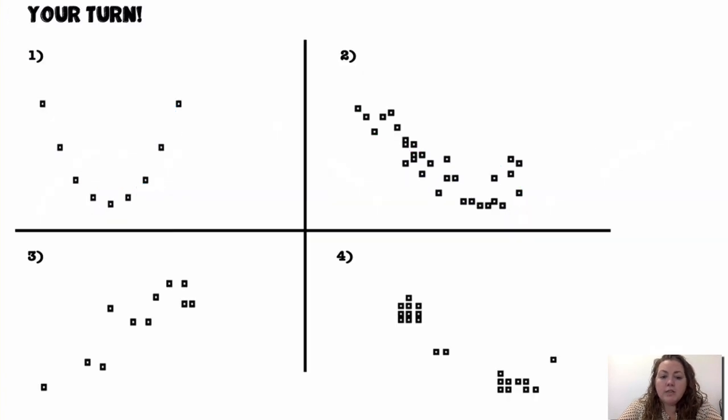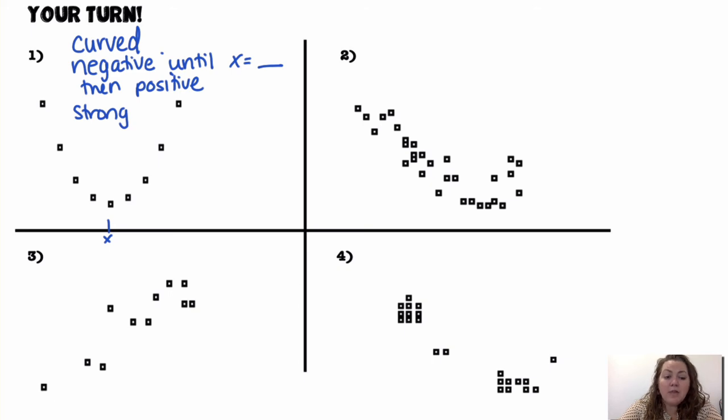Alright, your turn. See if you can try these. So, go ahead and pause and try them. And, I'll go over the answers in just one second. Alright, hopefully you tried them. For the first one, I would say this is curved. It has a negative association until X equals whatever number it is, and then positive. And, it is strong.